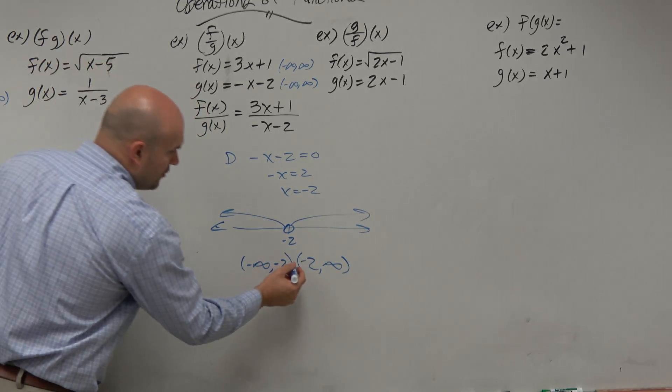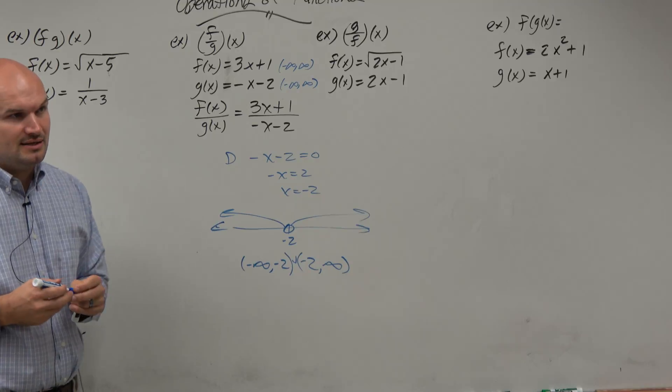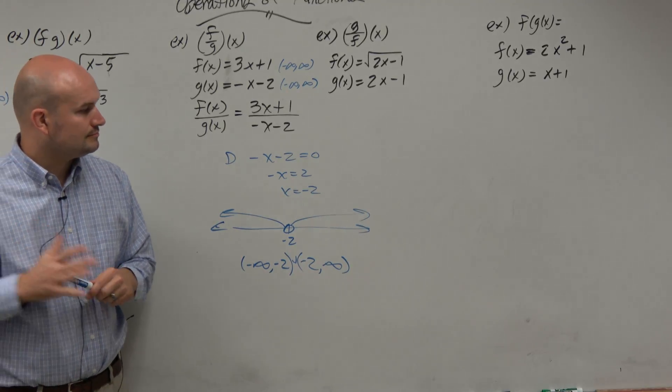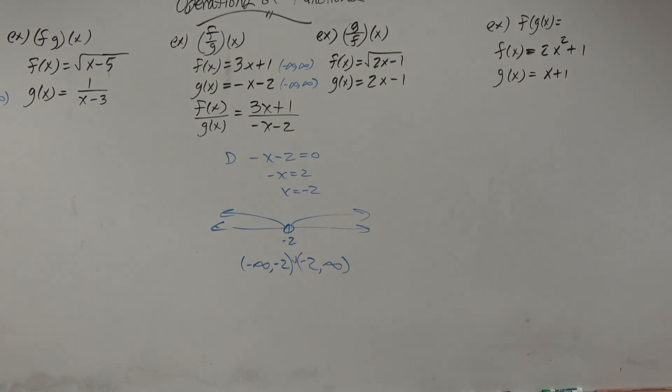Then it continues after negative 2, and it continues all the way to infinity. Write it just like that, or put in a union symbol to connect them. Either way. OK? All right. So now.